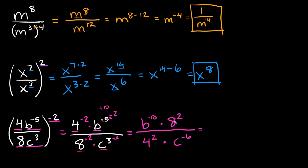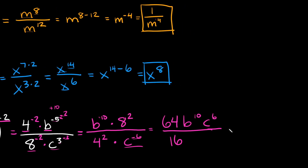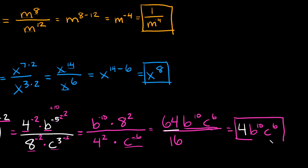Write the coefficients first: 8 squared is 64, so we have 64 times b to the 10th on top, over 4 squared which is 16. Then c to the negative 6 moves to the denominator as c to the positive 6. Finally, 64 divided by 16 equals 4, so the final answer is 4 b to the 10th over c to the sixth.